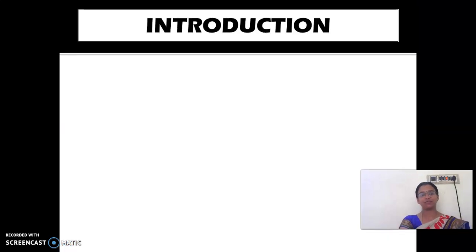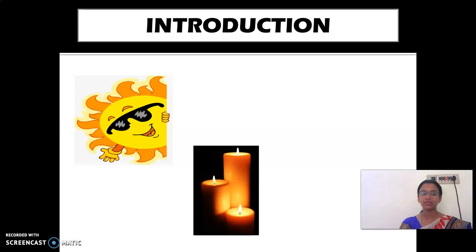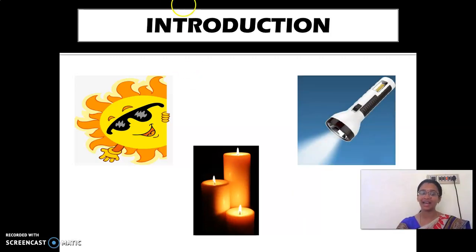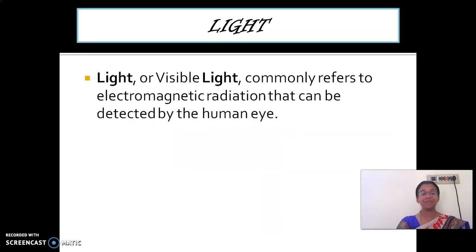So introduction — what is the main source of light? Yes, I can guess your answer. Sunlight is the main source of light and heat. Other than this we have some other sources of light — they are candle, torch. Sunlight is the natural source of light, and these are all the artificial or man-made sources. Stars are also a natural source.